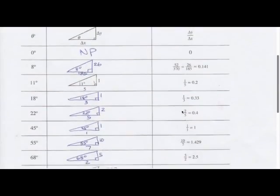Number one: at 45 degrees the slope ratio is one. So when our angle is 45 degrees, our slope ratio is one. If our angle is greater than 45, like 55 or 68, you'll notice that the slope ratios are actually greater than one. And if our angle is less than 45 degrees, all our slope ratios are going to be less than one.